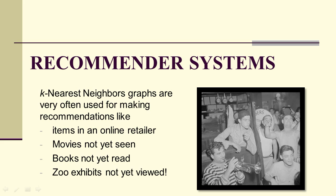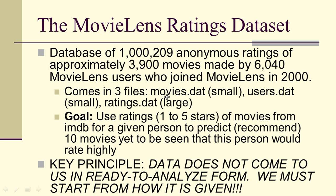We're going to look at the MovieLens ratings dataset. This is about a million anonymous ratings of about 3,900 movies from about 6,000 MovieLens users. The data is in the form of three files: movies.dat, users.dat, and ratings.dat, which is the large one.